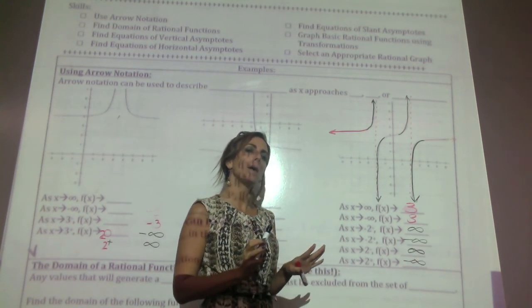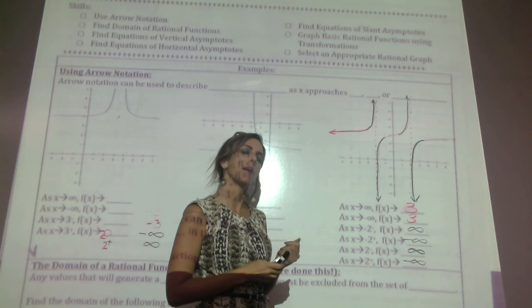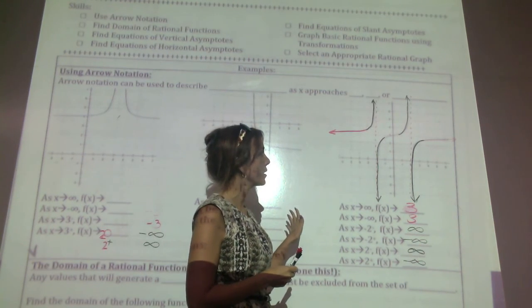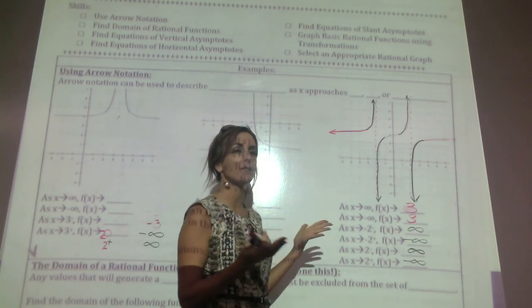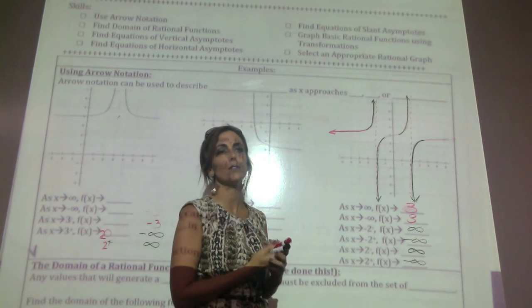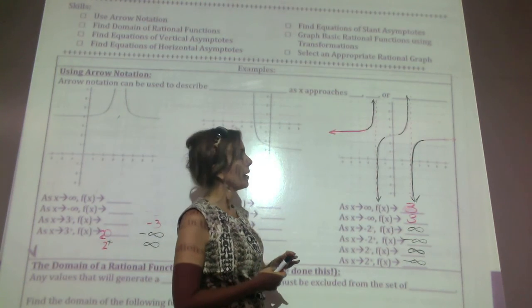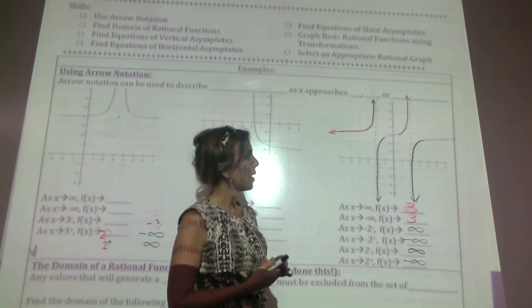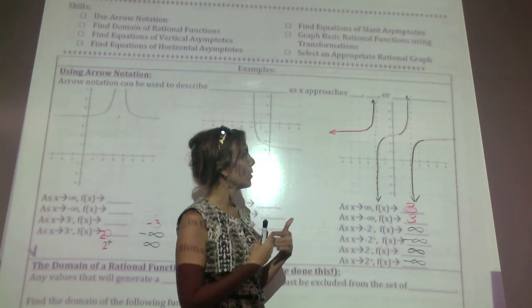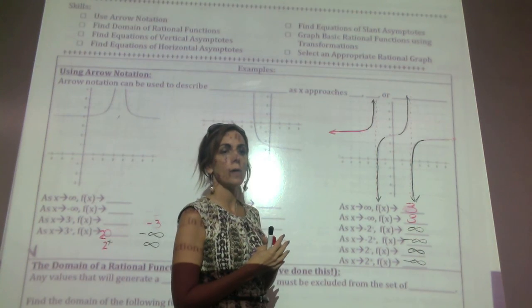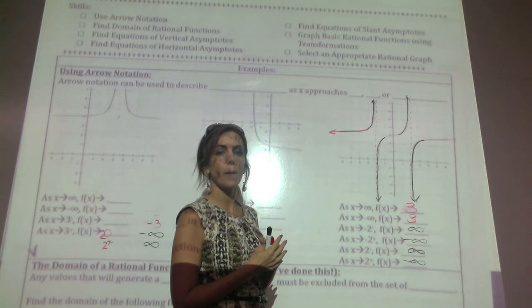I hope that helps you out with arrow notation and graphs. We use this a lot to discuss end behaviors and also asymptotic behavior. We'll see you next time.